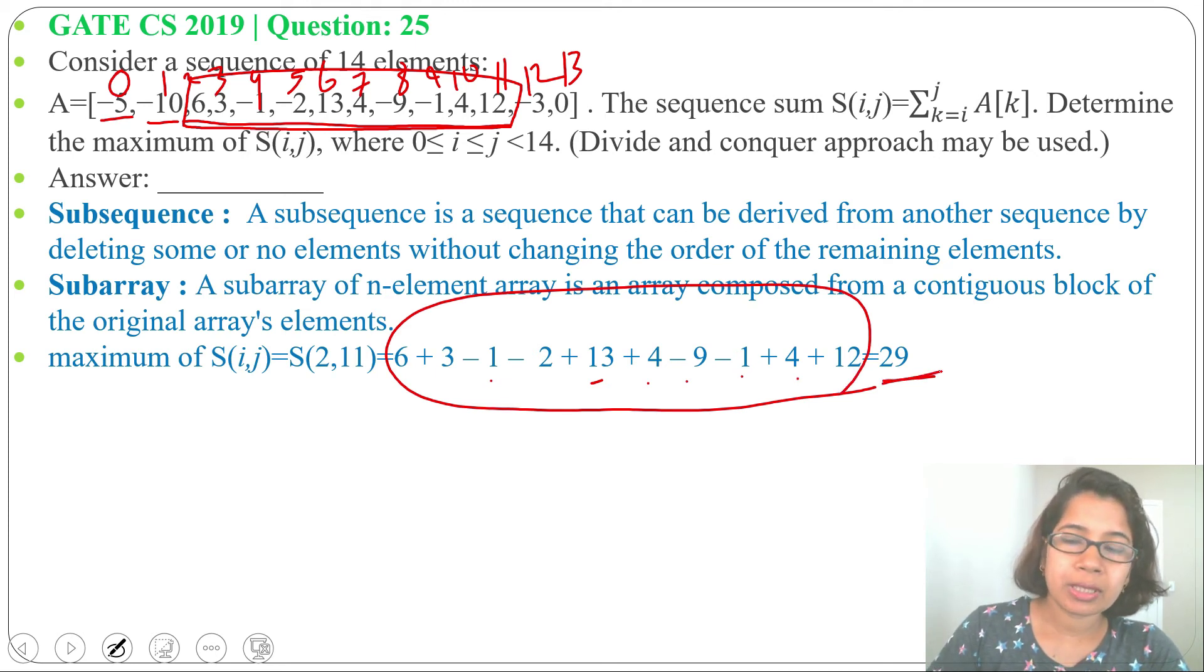We choose a subarray. If we'll include minus 10, then result will be 19. If we'll include minus 5 and minus 10, then result will be 29 minus 15, it will be 14. So what is maximum sum? Starting from 6 till 12. So if we're considering i equals to 2 and j equals to 11, then in that subarray, sum is maximum.